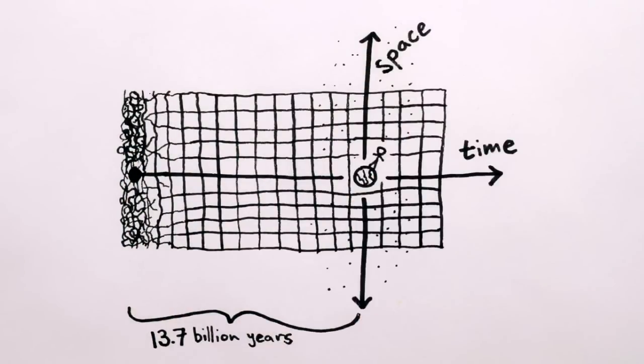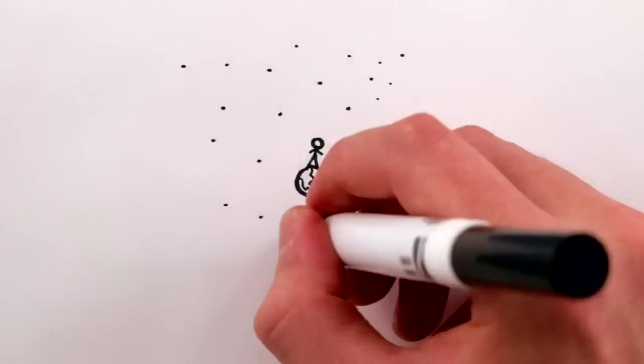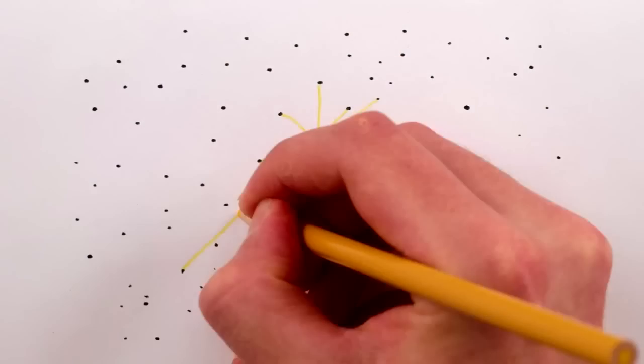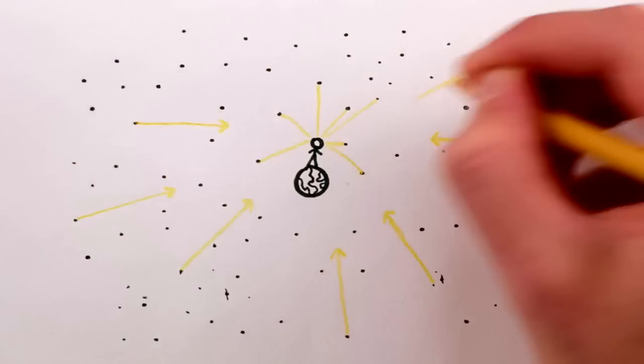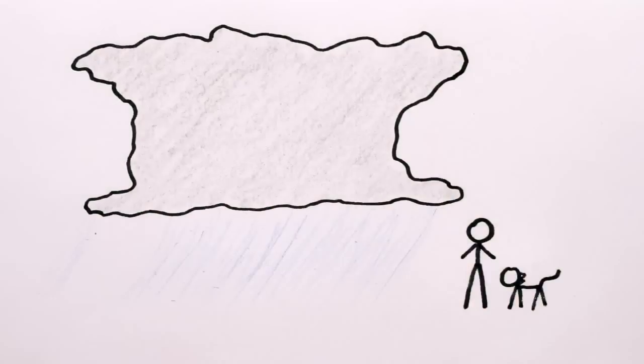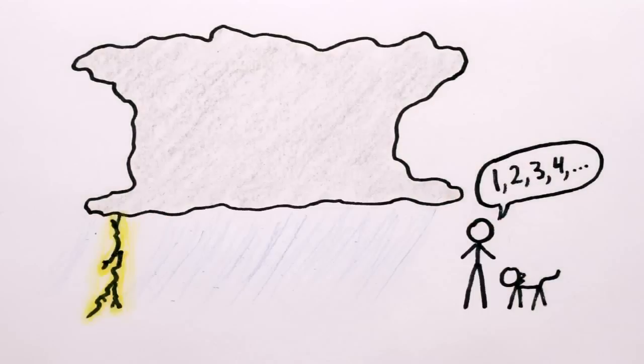And since only a finite amount of time has passed since this so-called beginning, that means that some of the stars necessary to fill up the brightness in every direction are so far away that light from them plain hasn't had time to reach us yet. It's as if the universe were a big thunderstorm, and we're still waiting to hear the thunder from the really distant stars.